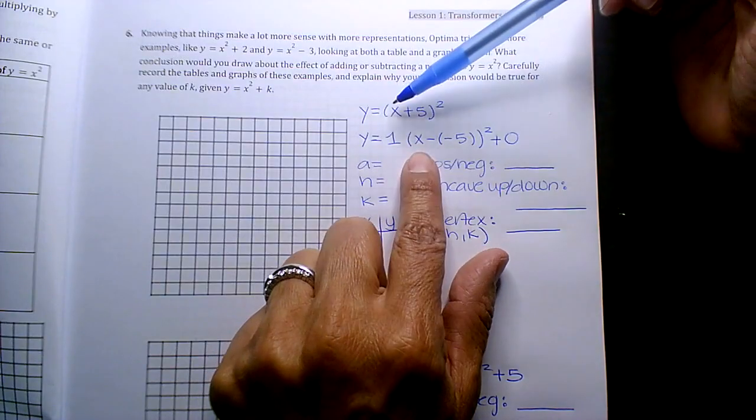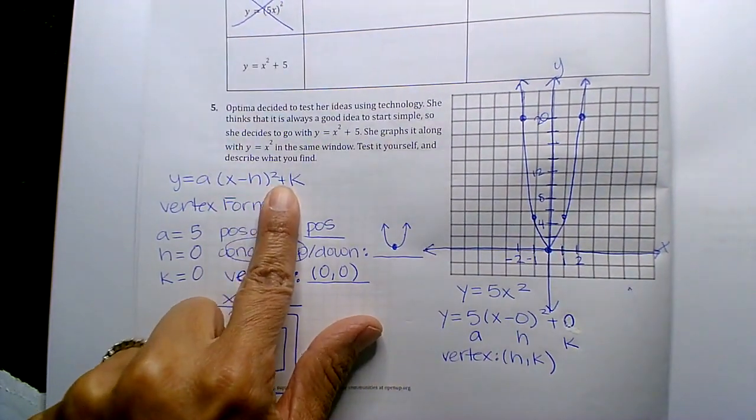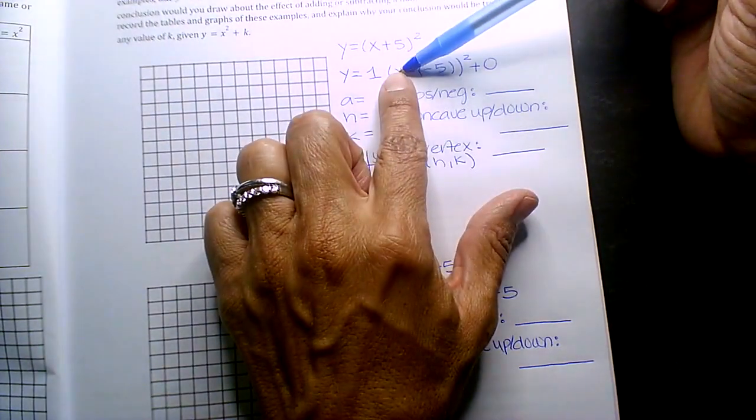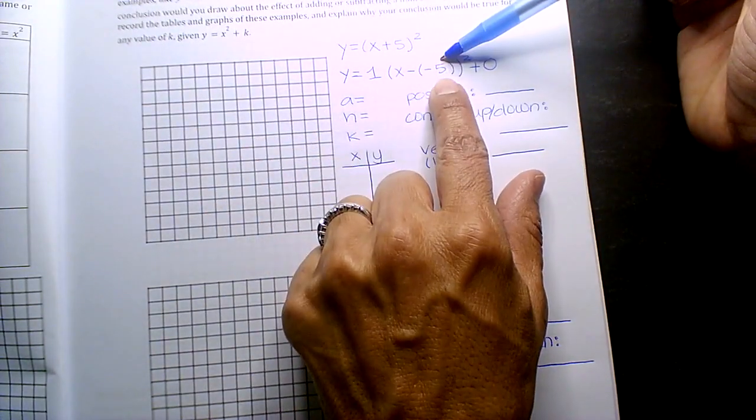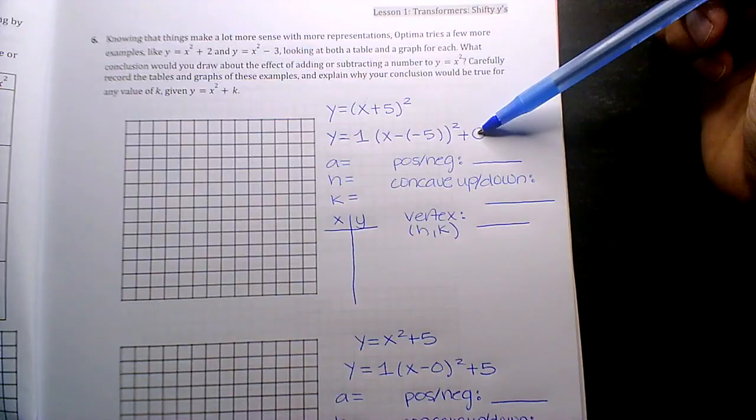Here that's 1. It's x minus h, x minus h, plus k. So if you guys see it, x plus 5, it's really x minus the value of h which is negative 5, and then plus k which is 0. So this is your a, h, k.